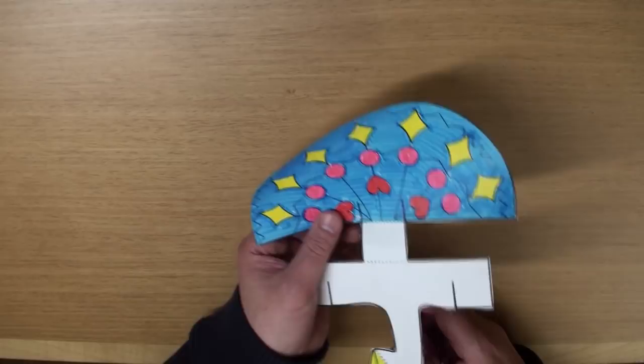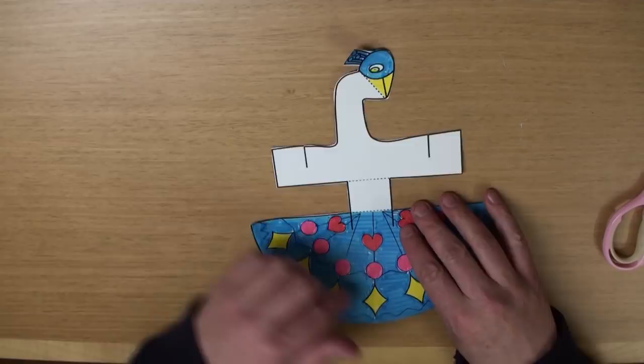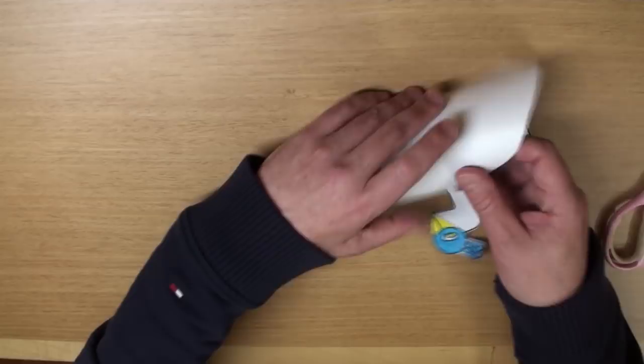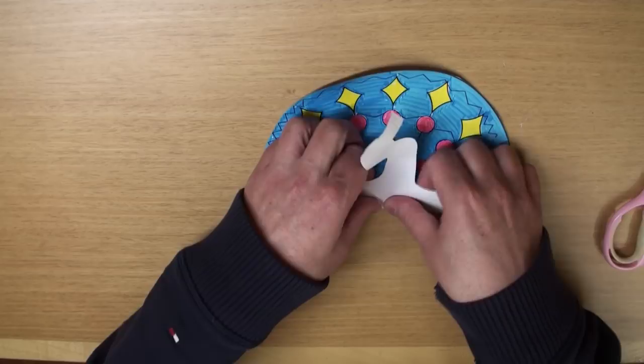And next, we're going to fold. Fold it on the dotted line here. Like that. And fold it on the other dotted line like this. Yeah! And for the head, we're going to fold that down like this. Great!